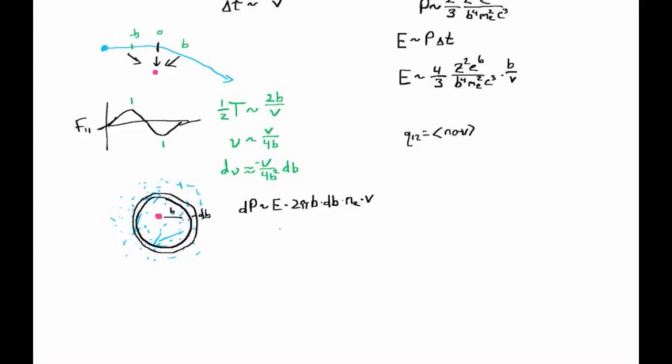Now if we plug in for E, and we also plug in for dB, which is 4B squared over V d nu, times the number density of electrons times their velocity, and we divide d nu over onto the other side, we get dP, derivative of the power emitted with respect to frequency, is of order 32 pi over 3, Z squared e to the sixth, n_e, our B's cancel, over me squared c cubed, times one factor of velocity in the denominator.